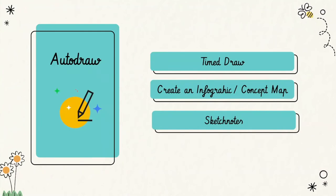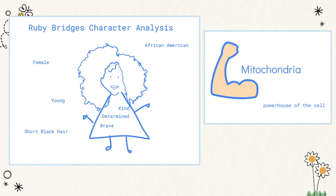Next up on our choice board is AutoDraw. AutoDraw is an online drawing tool that employs artificial intelligence to transform student sketches into conventional icons. To incorporate this tool as a lesson hook or closure, I recommend having students complete a timed draw, create an infographic or concept map, or create sketch notes. Simply give your students the AutoDraw link with the creative prompt of your choice — from there, student creativity takes charge.